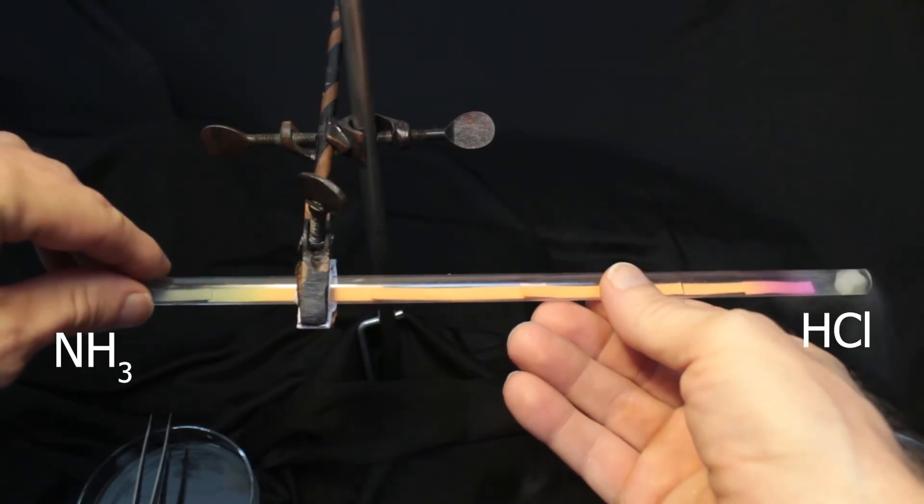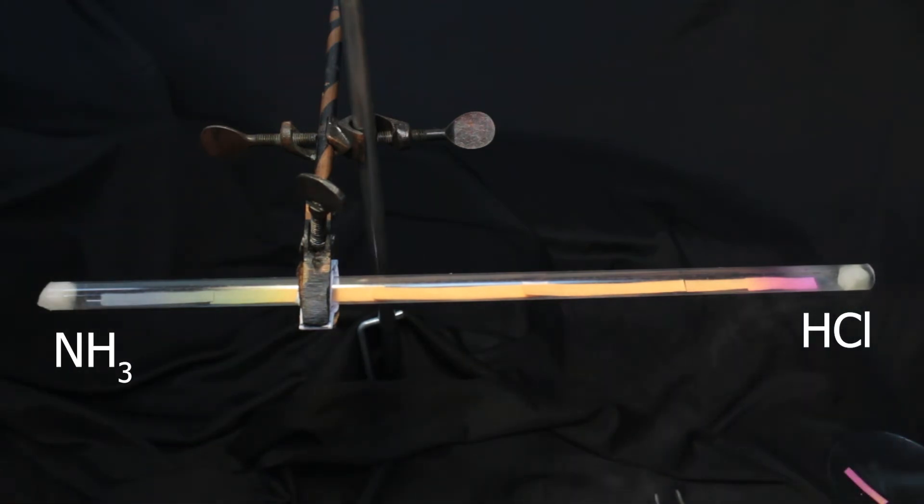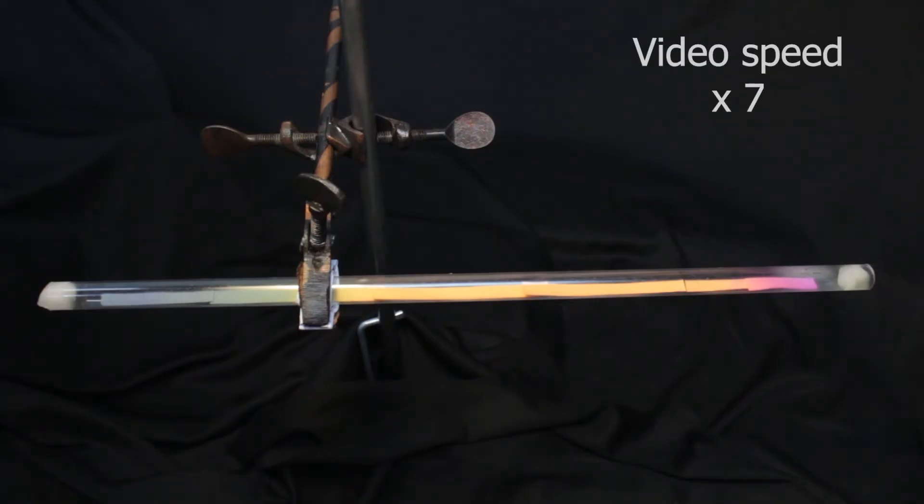The diffusion already started. The molecules of gases move towards each other in the tube. Blue-green is the track of ammonia, and red is the track of hydrogen chloride. Here I sped it up, otherwise we would have to wait for a few minutes.